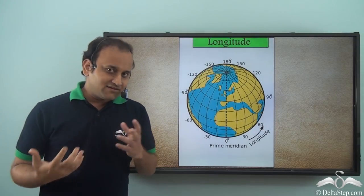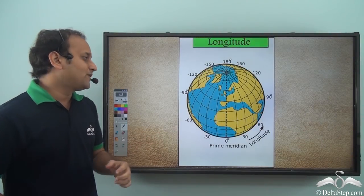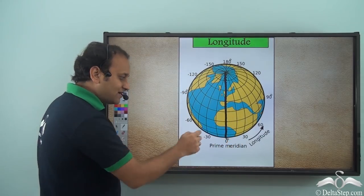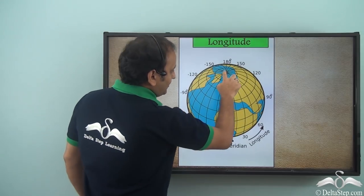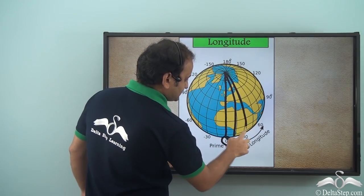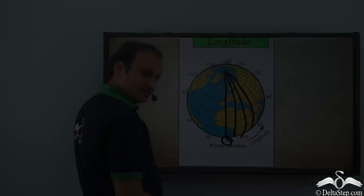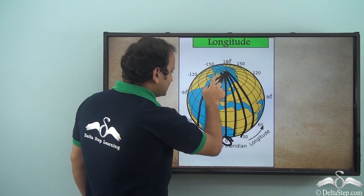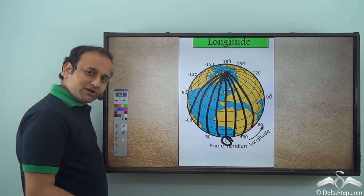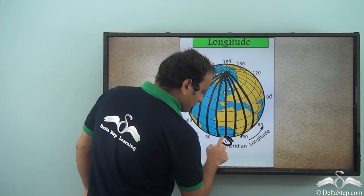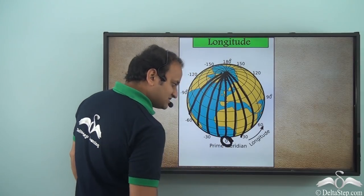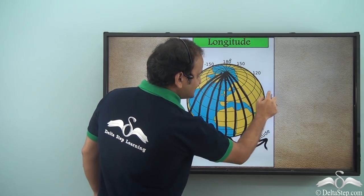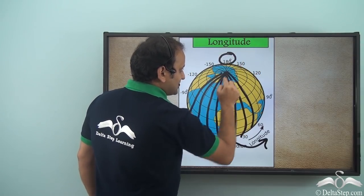Another important set of lines is the longitudes. Taking the prime meridian as the base at 0 degrees, we have drawn a number of lines on the planet Earth. They all start at the poles and end at the poles. These lines are the longitudes. They are numbered similarly to latitudes, starting from the prime meridian. On the eastern side they are numbered 30, 60, 90, 120, 150, and 180 is the last one.